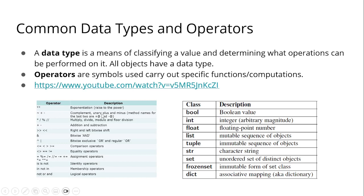The tilde (~) is complement, unary plus and minus. Method names for the last two are __pos__ or __mul__. Then we have divide, modulo — we call the percentage sign modulo in programming — and floor division for double slash (//). Plus and minus are for addition and subtraction. Right and left bitwise shift operators, bitwise AND for the ampersand symbol, and bitwise exclusive OR.